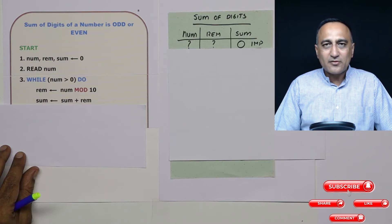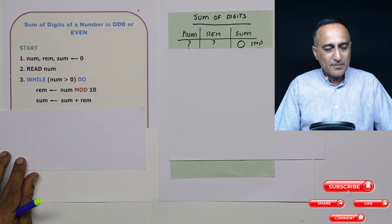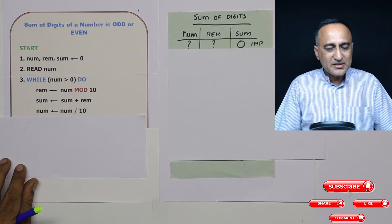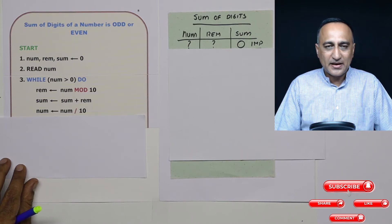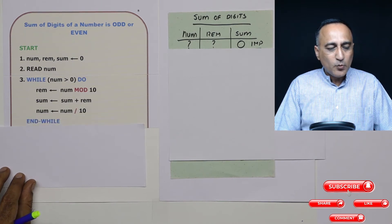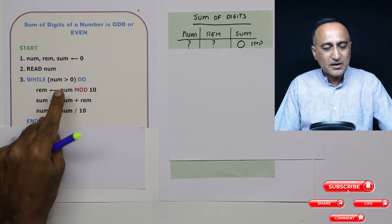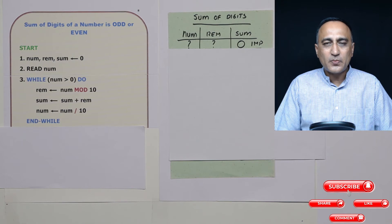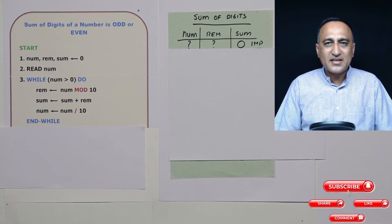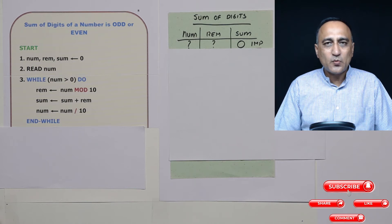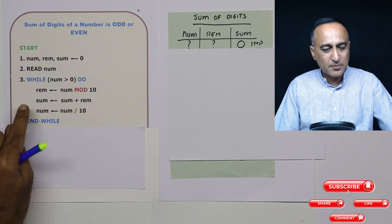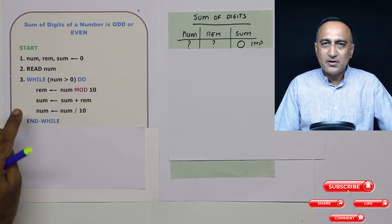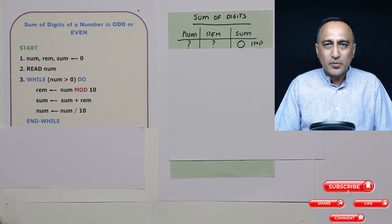Then I need to get rid of the rightmost digit. So I am saying number is number divided by 10. And this particular loop will continue till the number becomes zero. This is based on the logic of a problem where we have done extracting the digits of a number from right to left and printing one digit at a time. A similar logic was also used in numeric palindrome.